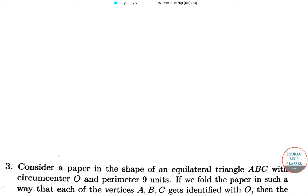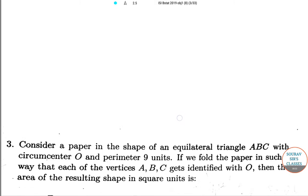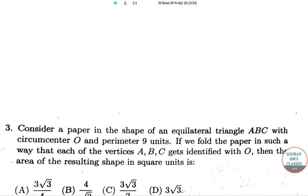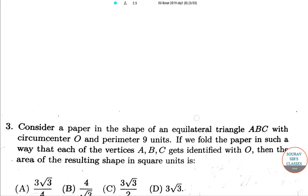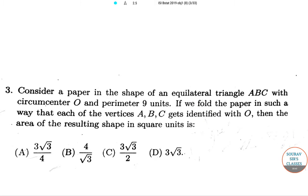Here is question number 3. Consider a paper in the shape of an equilateral triangle ABC with circumcenter O and perimeter 9 units. If we fold the paper in such a way that each of the vertices A, B, C gets identified with O, then the area of the resulting shape in square units is: option A 3√3/4, option B 4/√3, option C 3√3/2, option D 3√3.